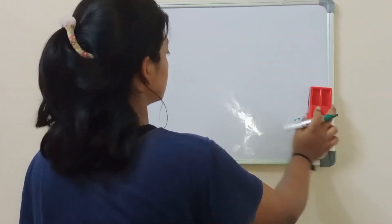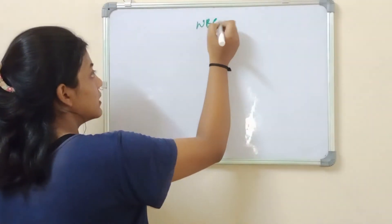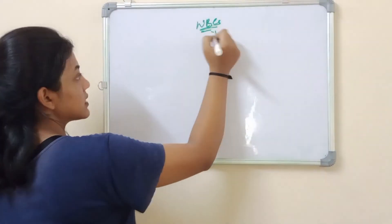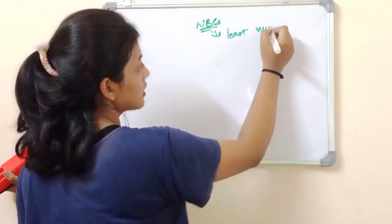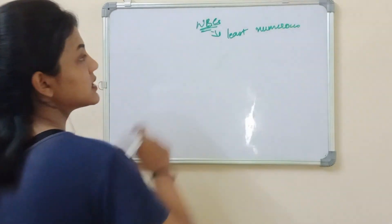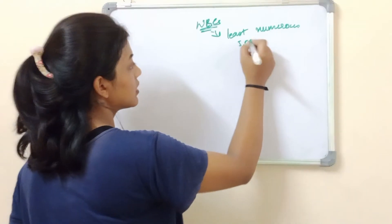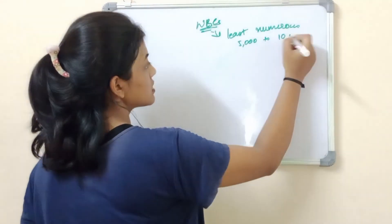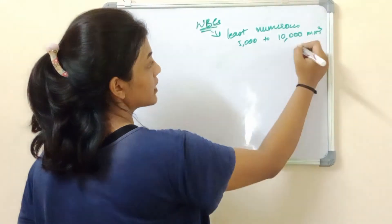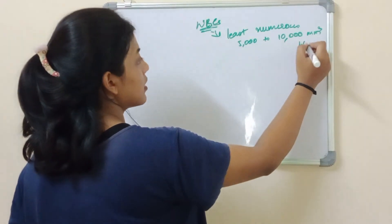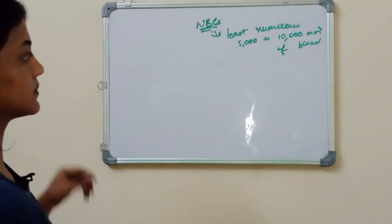WBCs have a short lifespan and are the least numerous among RBCs, WBCs, and platelets — around 5,000 to 10,000 per millimetre cube of blood.